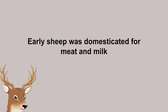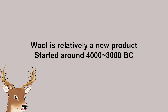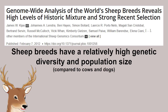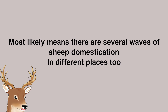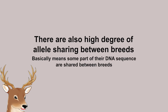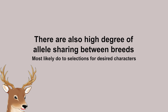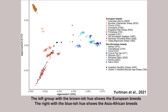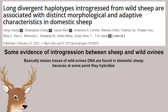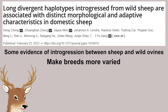Sheep have been domesticated since around 10,000 BC in Southwest Asia. Early sheep were most likely domesticated for their meat, and probably also milk. Domestication for wool most likely only started during 4,000 to 3,000 BC. Molecular studies on sheep have revealed a relatively high genetic diversity, especially in comparison to other domestic animals. This hints to the fact that there were most likely several waves of distinct domestication. Even so, there is also a high degree of allele sharing, which hints that these different domestic breeds were often cross-bred with each other.